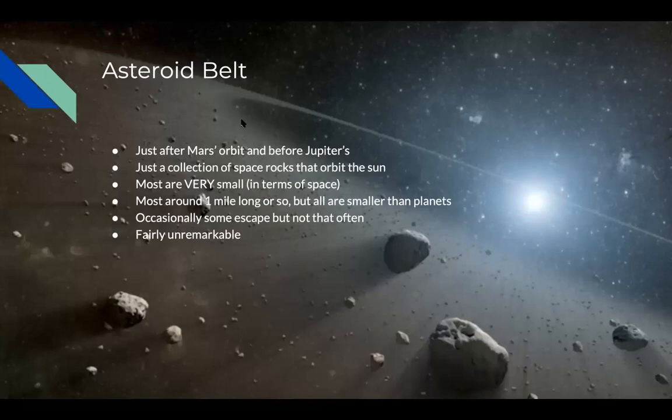The asteroid belt is fairly unremarkable. If you guys want to read it, feel free. All you really need to know is that it's just a collection of space rocks that orbit the sun, remaining from the early days of the solar system. That's really everything we need to know. I'll explain about the sun in the next class.